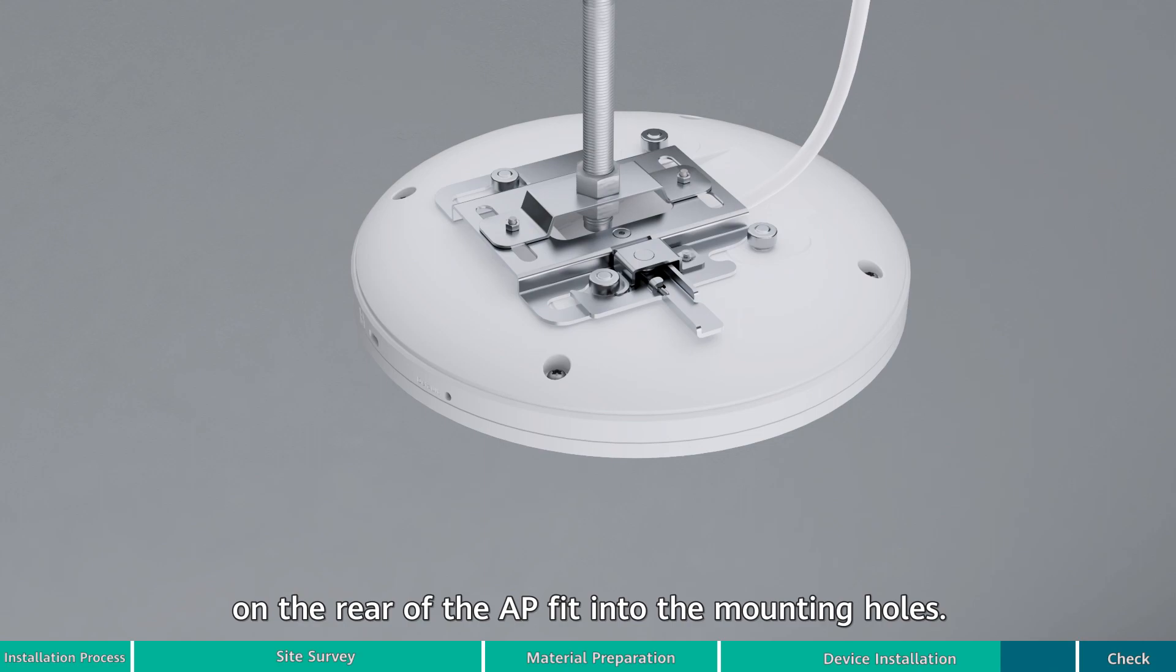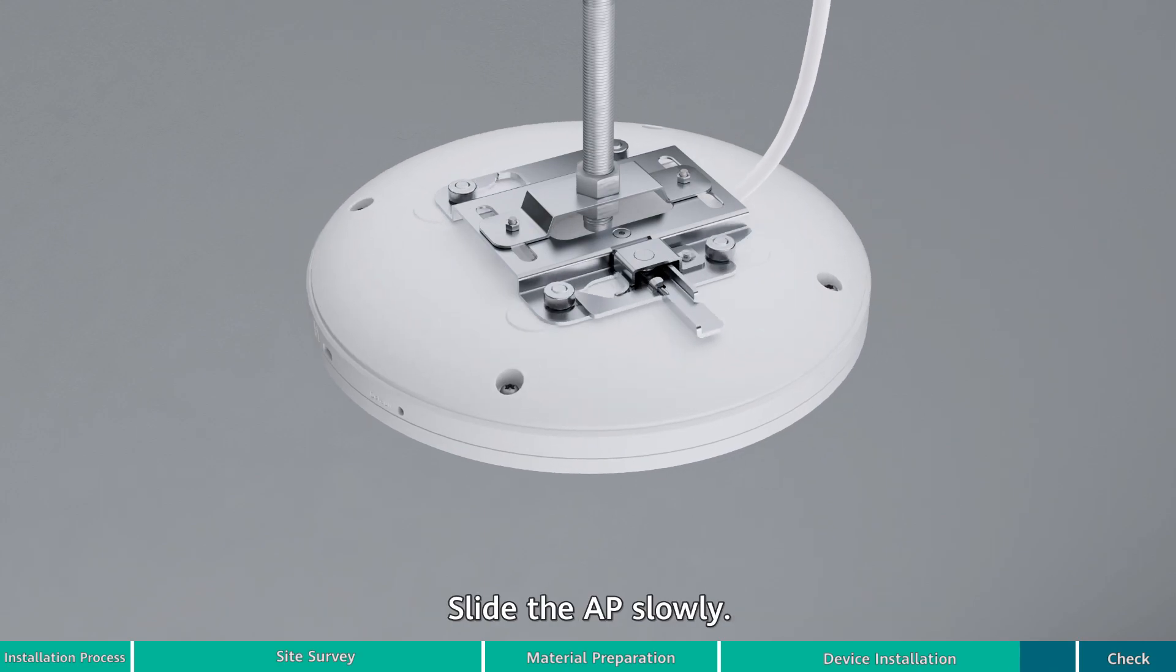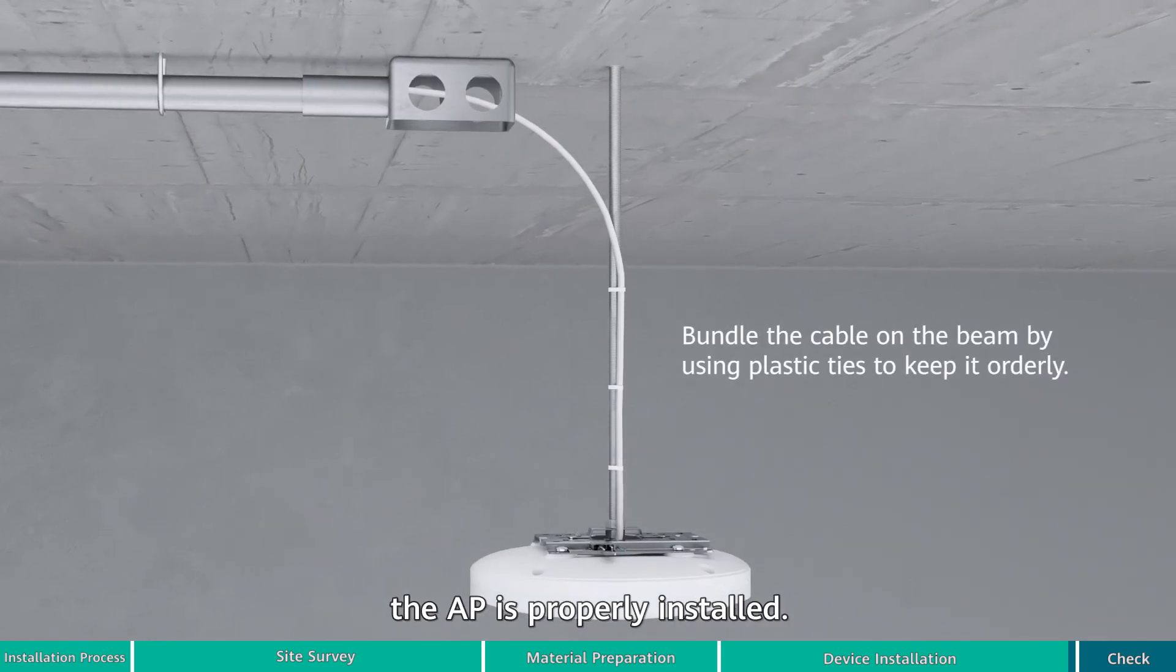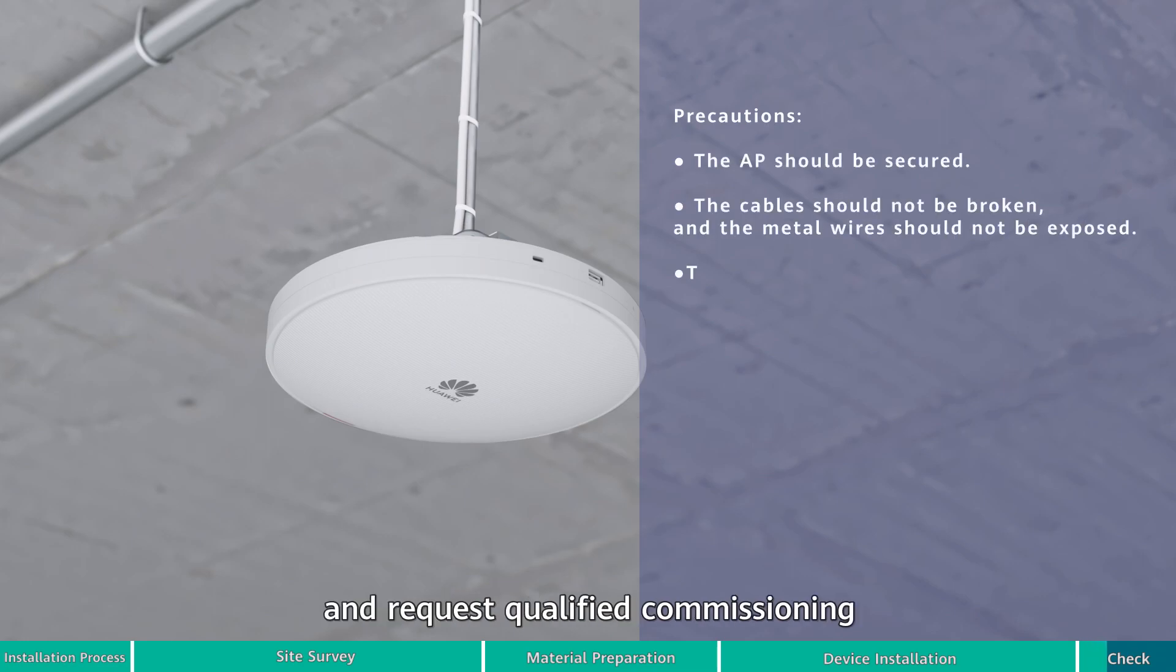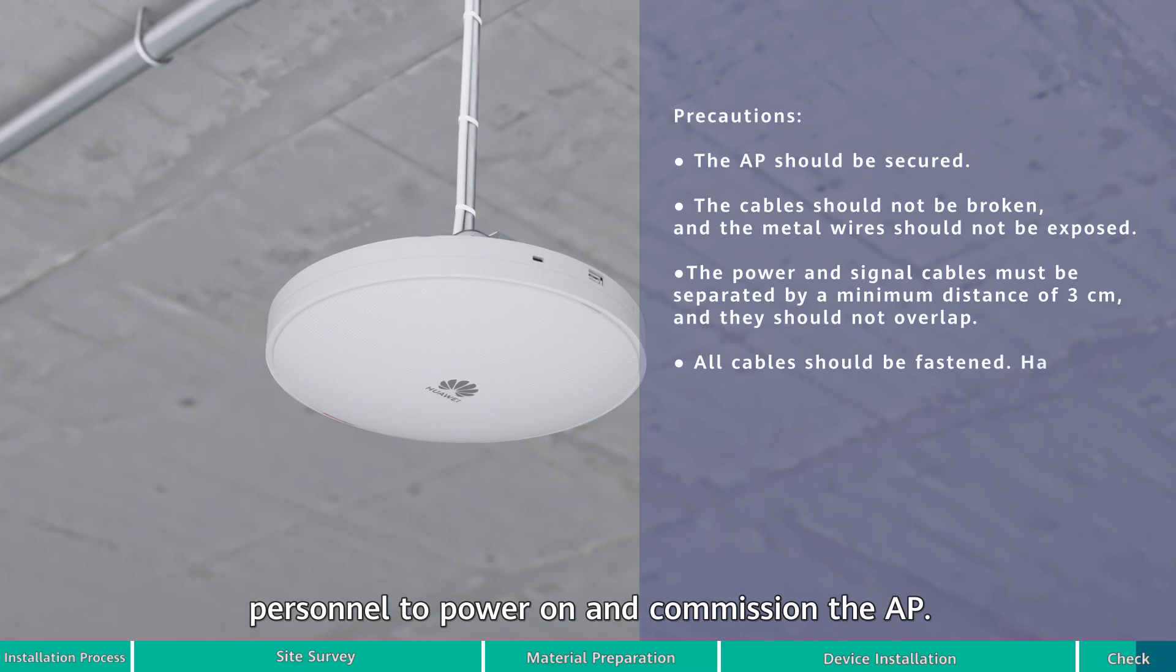Slide the AP slowly. When you hear a click sound from the release lever, the AP is properly installed. Check the installation and request qualified commissioning personnel to power on and commission the AP.